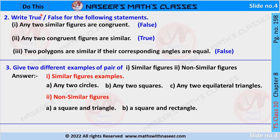Now we discuss page 198, chapter 8: similar triangles, part two — write true or false for the following statements. First statement: any two similar figures are congruent. It is false, because similar means corresponding angles are equal and corresponding sides are in the same ratio, whereas congruent means corresponding angles are equal and corresponding sides are also equal. So similar figures are not necessarily congruent.